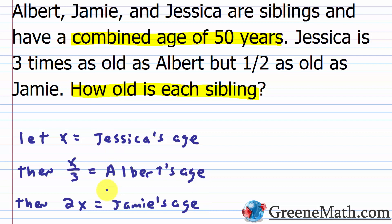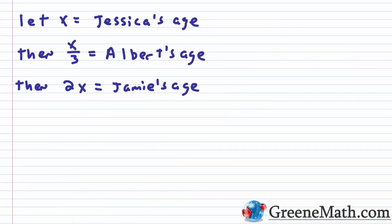Now we have everything modeled. Since their combined age is 50, we take Jessica's age (x), add Albert's age (x/3), and add Jamie's age (2x), setting that equal to 50. So we have: x + x/3 + 2x = 50.